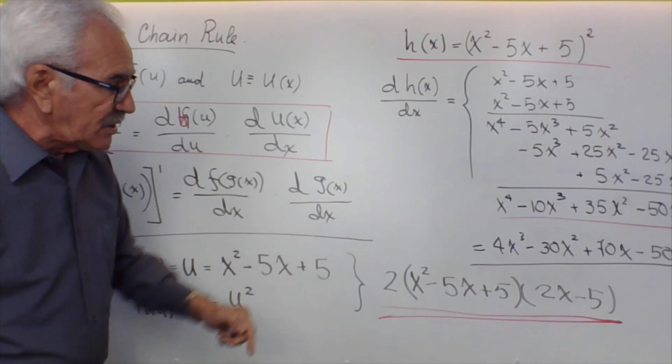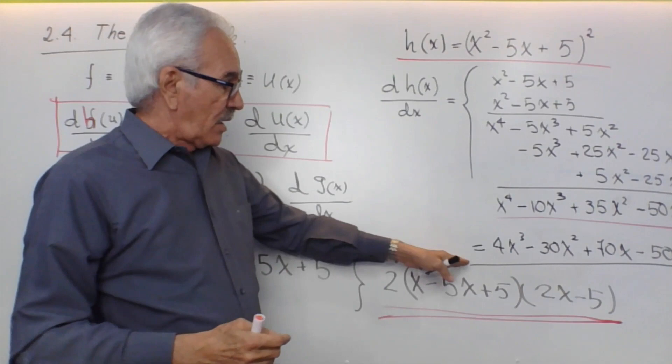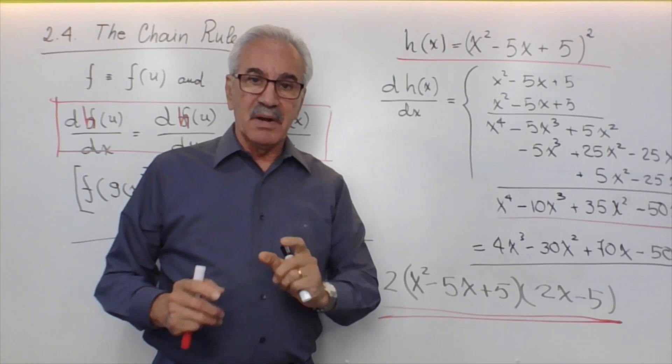We got the same result. We take advantage that the result is already in factored form. We don't need to apply the factor theorem, remainder theorem, or any other theorem to perform a factorization of a third-degree polynomial, which is not easily factorable.